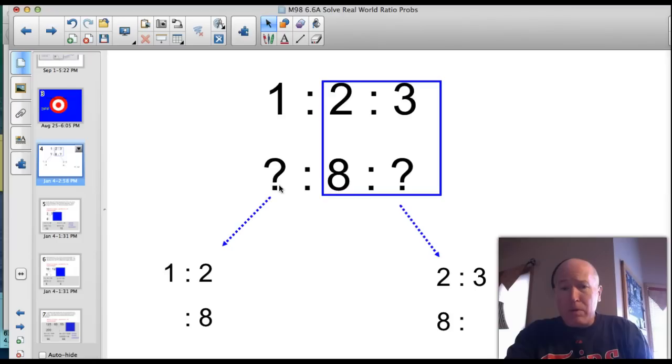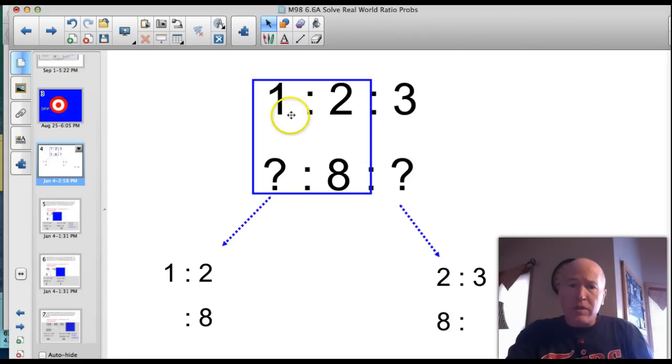Take a look at this ratio, 1 to 2 to 3. Now we really haven't seen a three-part ratio like that, but it really is going to work the same as a two-part ratio. So we've got something that has a ratio of 1 to 2 to 3, maybe it's a recipe.